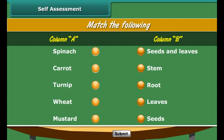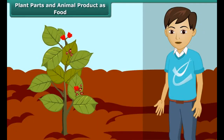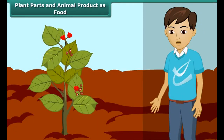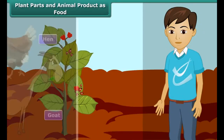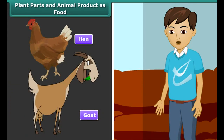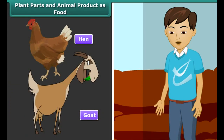We get eggs from hens and ducks. We also get meat from chicken, goat, camel, etc. Fish and prawn are also eaten. Honeybee gives us honey.